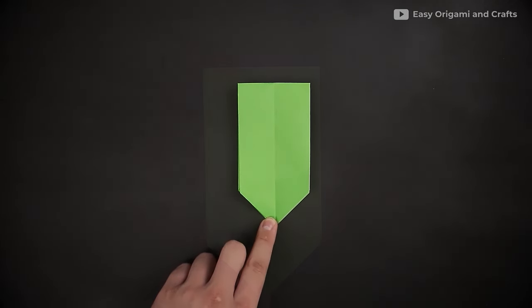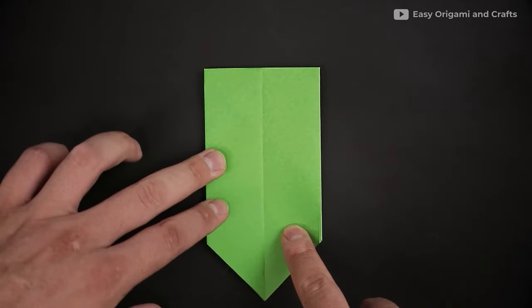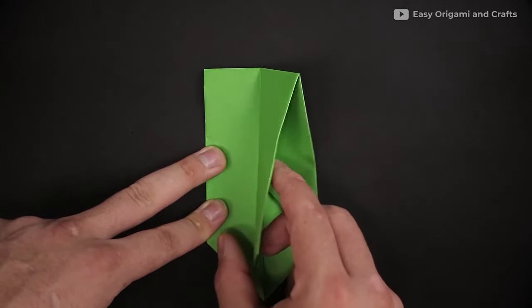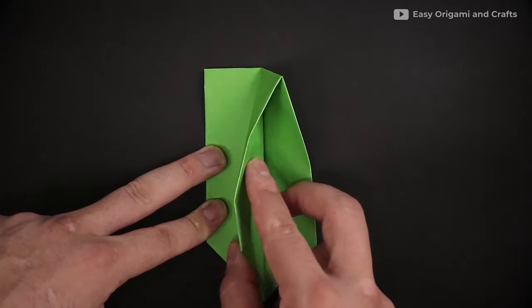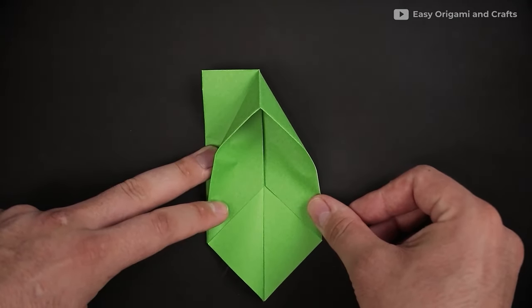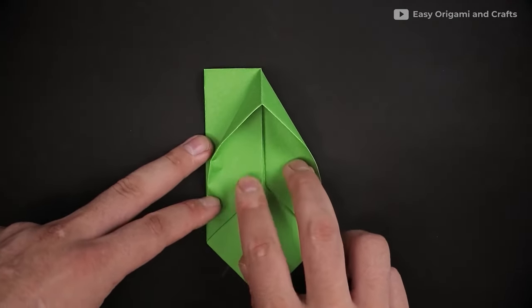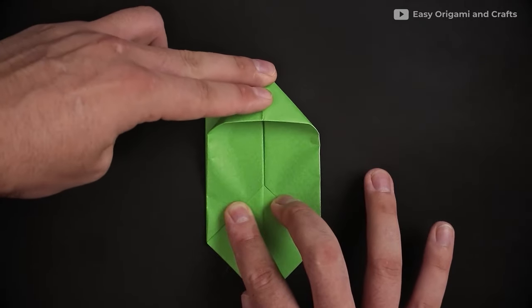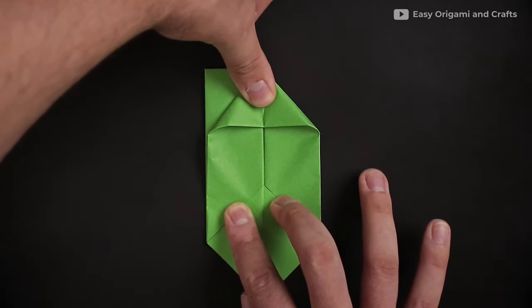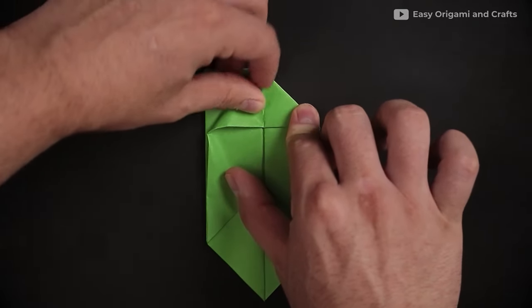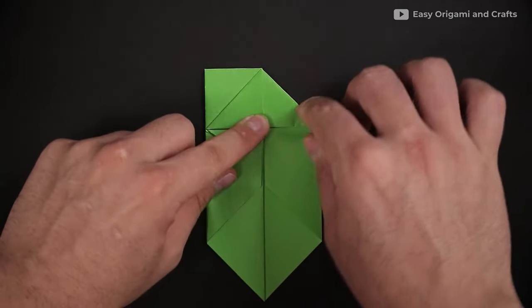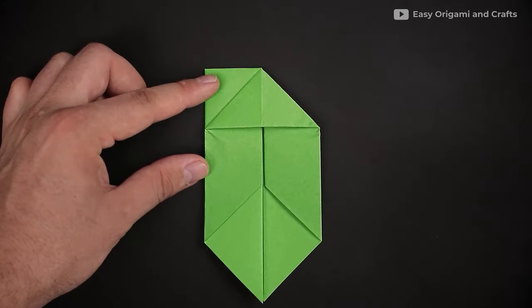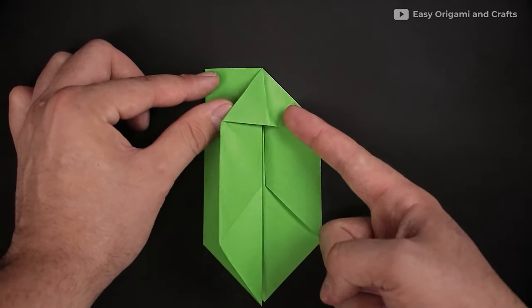And now, holding the paper in the same position, let's keep the left side closed and open the right. Once open, let's flatten the extra paper on top, shaping it like a triangle. Let's close again, back to the right.